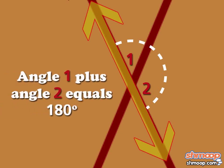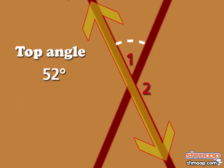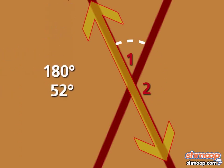Since they're supplementary, we know they add up to 180 degrees. And because we know the top angle is 52 degrees, we can find the side angle by subtracting. That's 180 minus 52. And the angle on the side is 128 degrees.